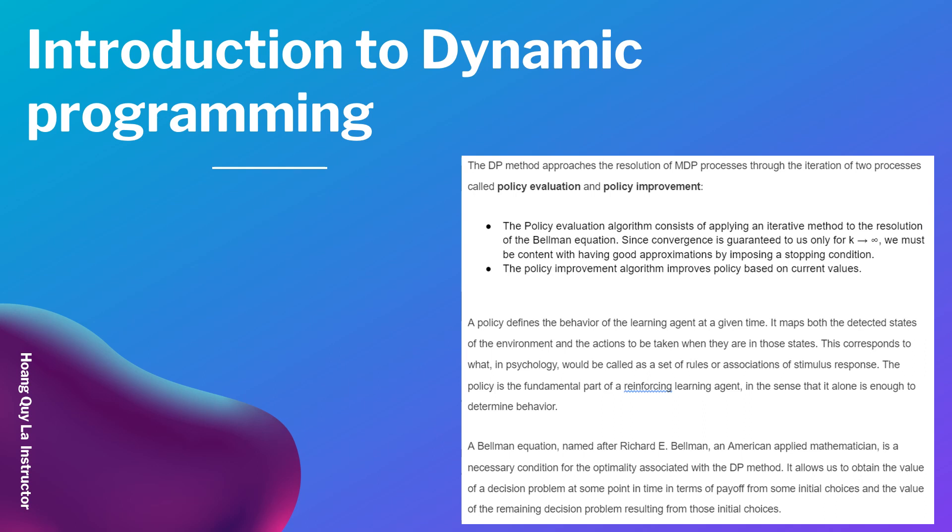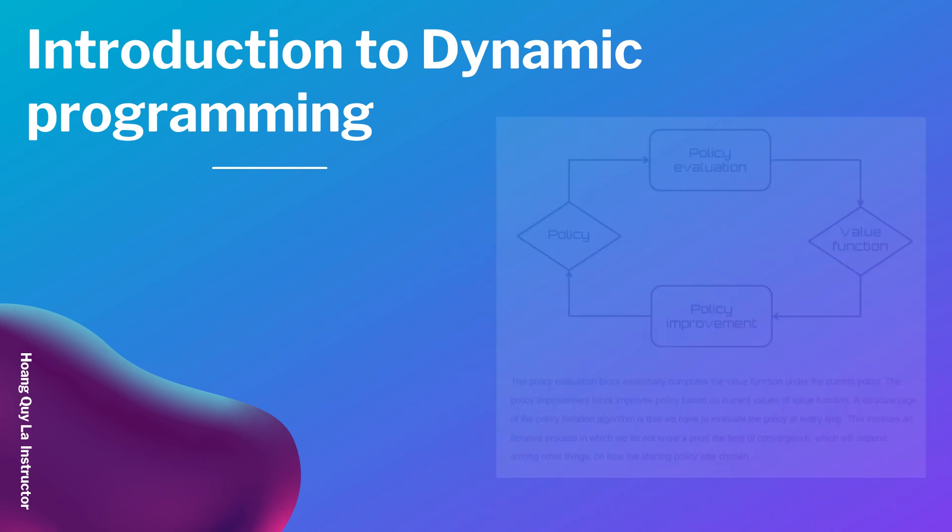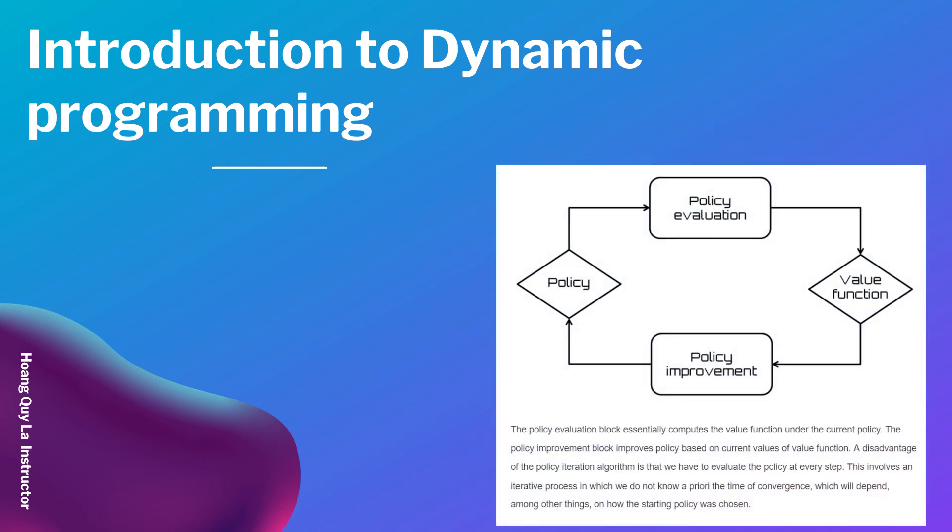The policy is the fundamental part of a reinforcement learning agent, in the sense that it alone is enough to determine behavior. The Bellman equation, named after Richard E. Bellman, an American applied mathematician, is a necessary condition for optimality associated with the DP method. It allows us to obtain the value of a decision problem at some point in time in terms of payoff from some initial choices and the value of the remaining decision problem resulting from those initial choices.